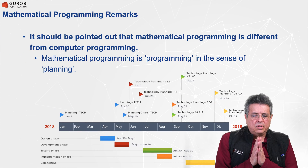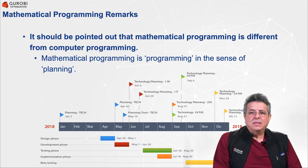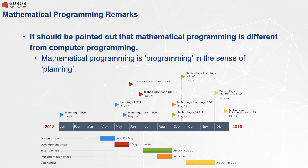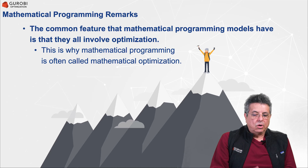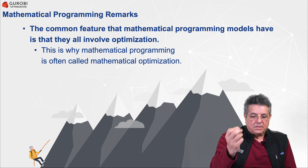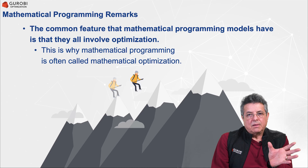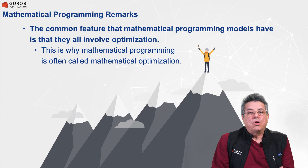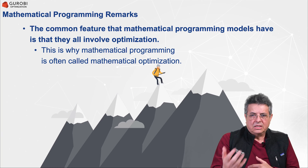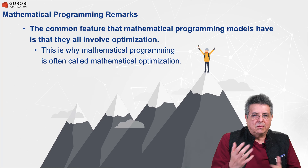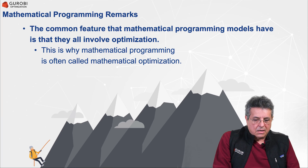Mathematical programming is different from computer programming. Mathematical programming is programming in the sense of planning. The common feature of mathematical programming models is that all these models involve optimization. This is why mathematical programming many times is also called mathematical optimization. When you hear about mathematical optimization, essentially you are talking about mathematical programming, and vice versa — they are synonyms.